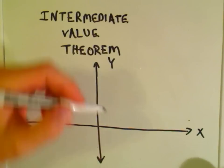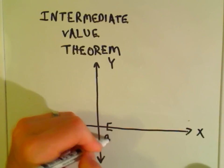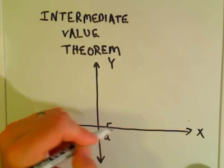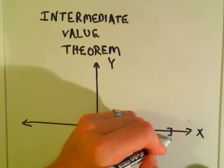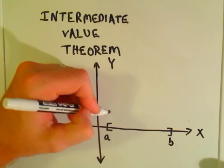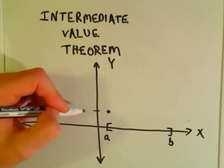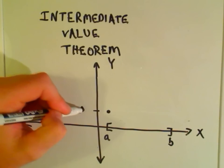The Intermediate Value Theorem says the following. It says, suppose you have a continuous function on a closed interval, so we'll say this is the x-coordinate of a, and the x-coordinate of b. Okay, so the function is continuous, and okay, so at a it equals some value, maybe we'll call it m.